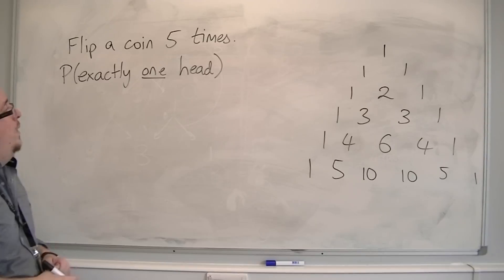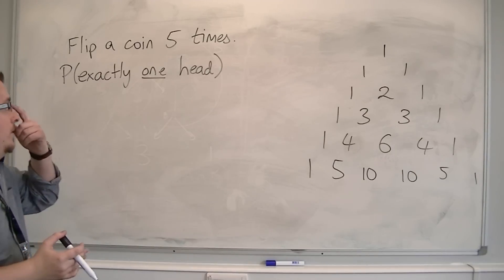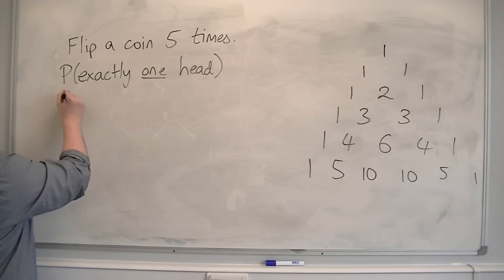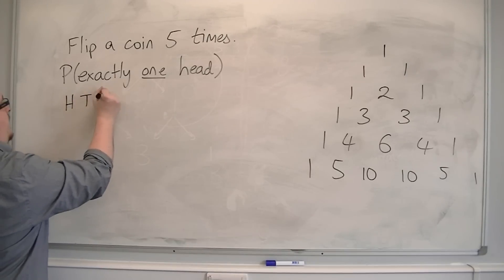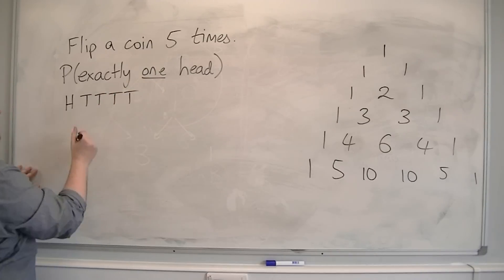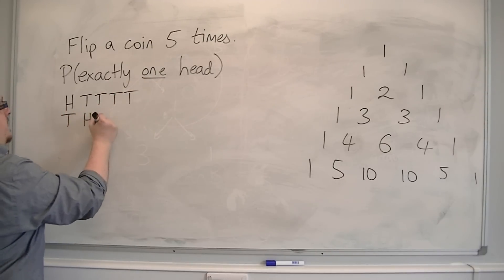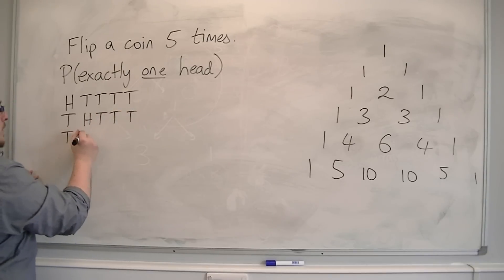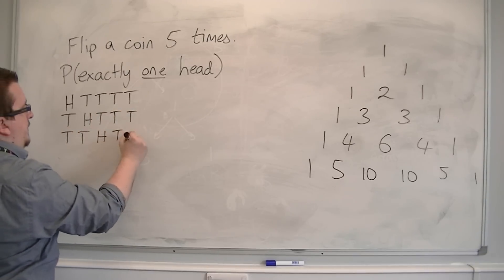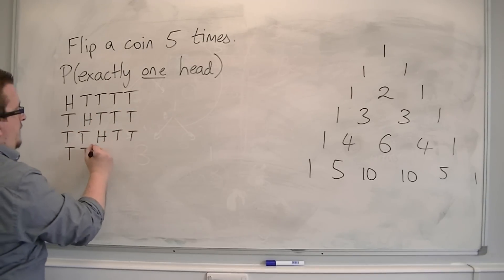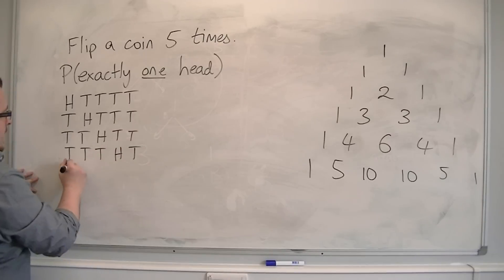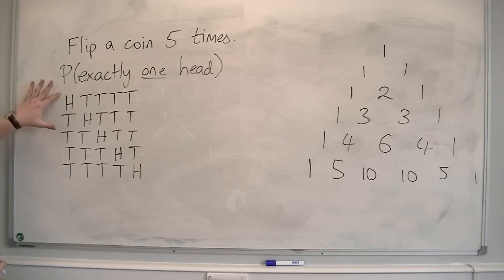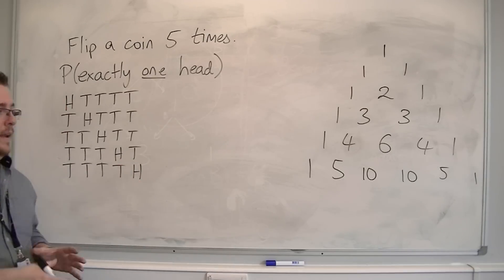If I've got a coin being flipped five times, then I could get: heads, tails, tails, tails, tails; or tails, heads, tails, tails, tails; or tails, tails, heads, tails, tails; or tails, tails, tails, heads, tails; or tails, tails, tails, tails, heads. So there are five different possibilities.